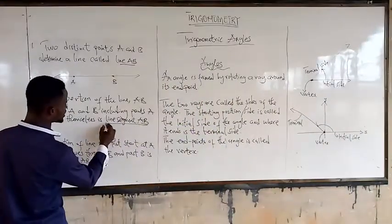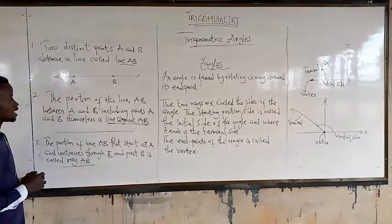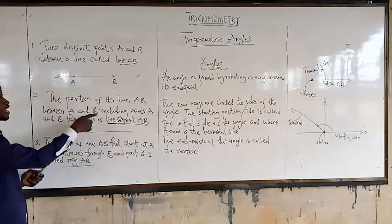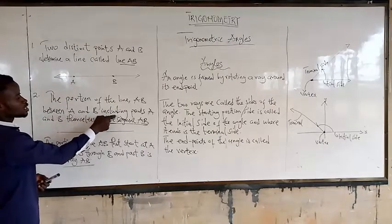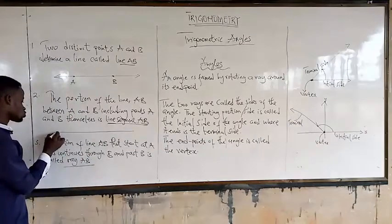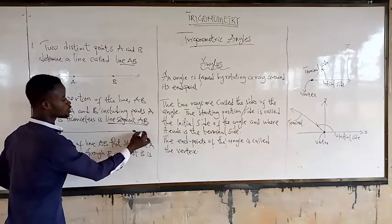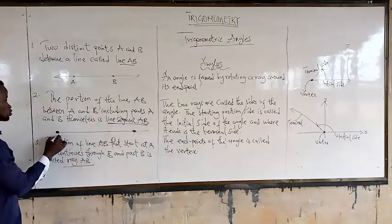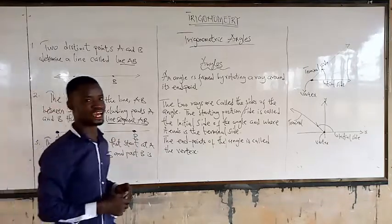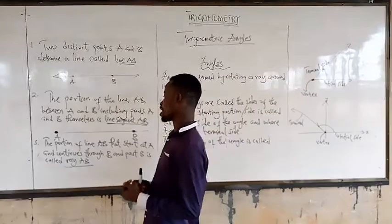So when we talk of a line segment, what we mean is the portion of a line between A and B, with A and B included. There is no extension beyond A or B — this will be A and this will be B. So this is what we call line segment AB.